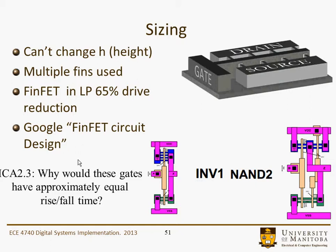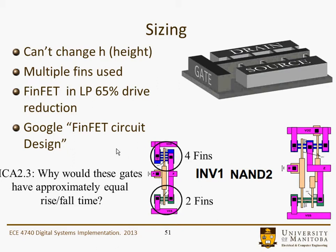Here's an in-class assignment: why would these two gates — inverter 1 and NAND gate 2 — have approximately equal rise and fall times? We haven't discussed these in great detail, but it's your old inverter friend. It looks a little bit different here because it's in the FinFET mode. This is the N-type transistor, this is the P-type transistor, and the thing to note is that in the pull-up part you have four fins, and in the pull-down section down here you have two fins.